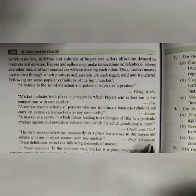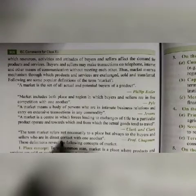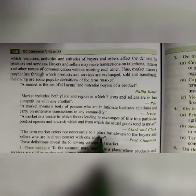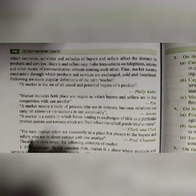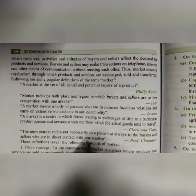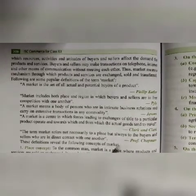According to Professor Chapman, the term market refers not necessarily to a place but always to the buyers and sellers who are in direct contact with one another. Place is not necessary, but buyers and sellers should always be there — without buyers and sellers, a market cannot be formed. There should always be a direct contact between buyers and sellers. You can learn any definition that you want.